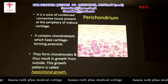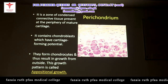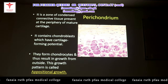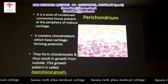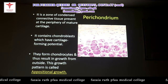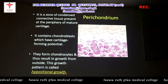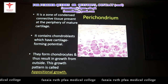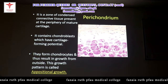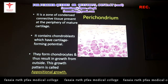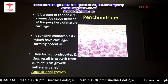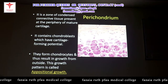The most outer layer — the perichondrium — is a zone of condensed connective tissue at the periphery of the mature cartilage. It contains chondroblasts which have cartilage-forming potential; they form chondrocytes and result in growth from outside. This type of growth is known as appositional growth, which comes from the perichondrium and adds to the thickness of the cartilage.